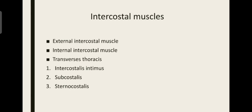There are various types of intercostal muscles — 5 types listed here. They are called external intercostal muscles, internal intercostal muscles, and transversus thoracis. In the transverse plane these muscles are arranged, so they are called transversus thoracis. Since they are differently arranged in different extents, they are collectively called transversus thoracis but named separately as intercostalis intimus, subcostalis, and sternocostalis.